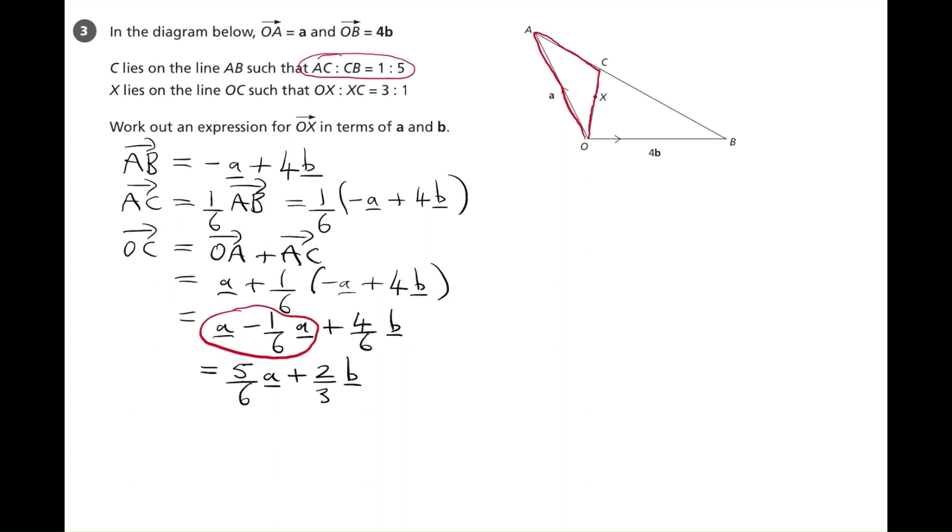Now we're in a position to actually work out OX. So if we look back at the diagram, the line OC is split according to this ratio. OX three parts, XC one part, four parts in total. So OX are three of the four, three quarters of OC.